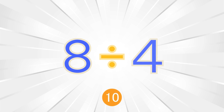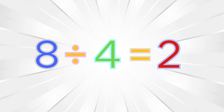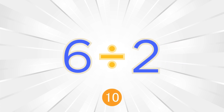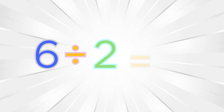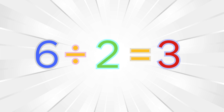Let's practice some more. Eight divided by four equals two. Six divided by two equals three.